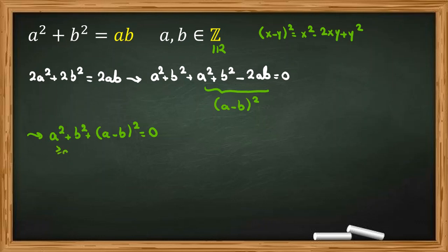Because all of them are at least 0, we don't have any negative numbers, so all of them should equal 0.